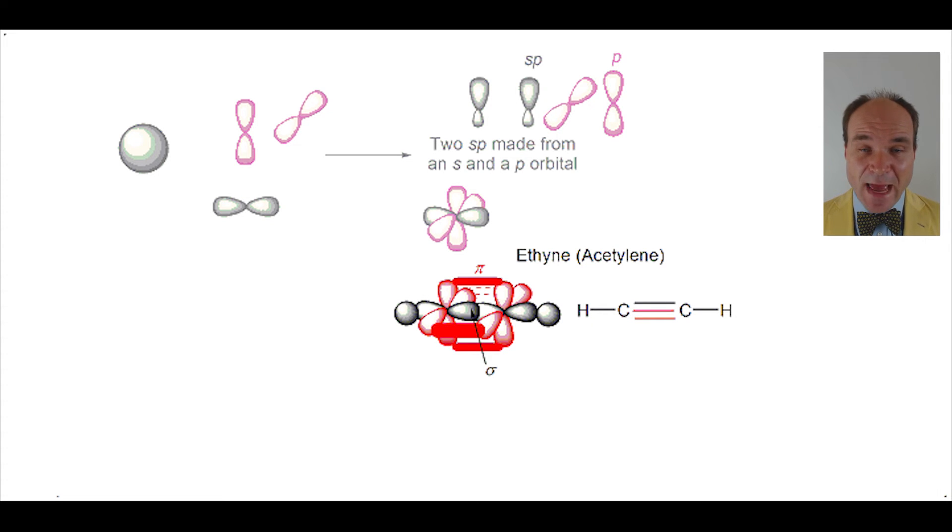Notice that the angle between the carbon and the hydrogen, which is one of the sp hybridized orbitals, is at 180 degrees to the carbon-carbon bond. Remember, that's being caused by another sp hybridized orbital. So that matches what we talked about earlier.